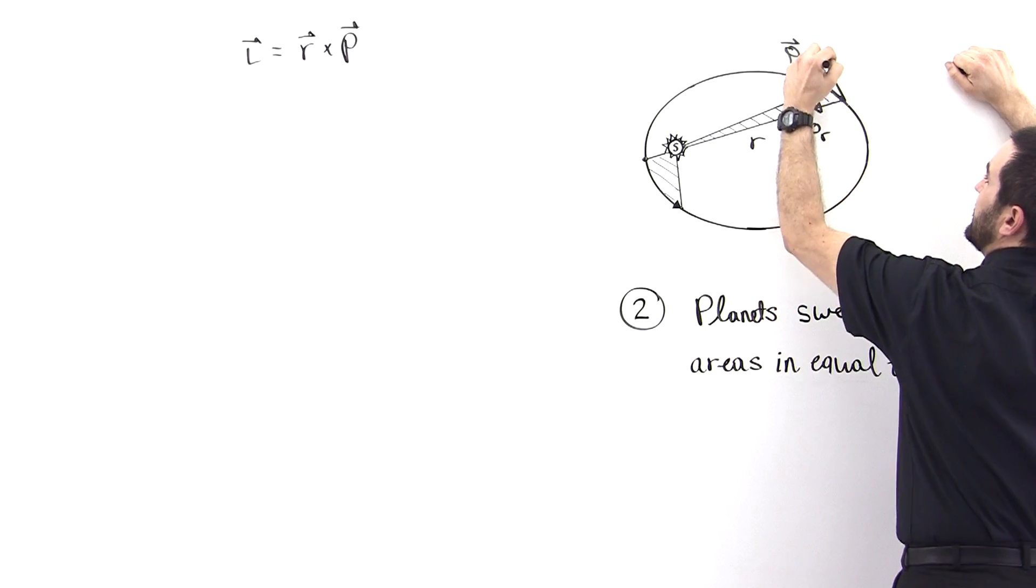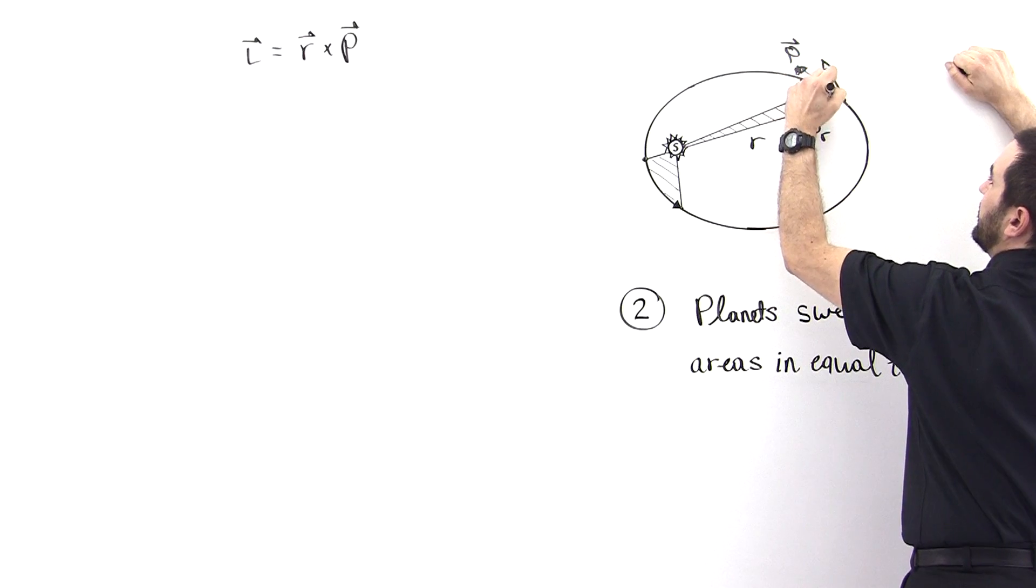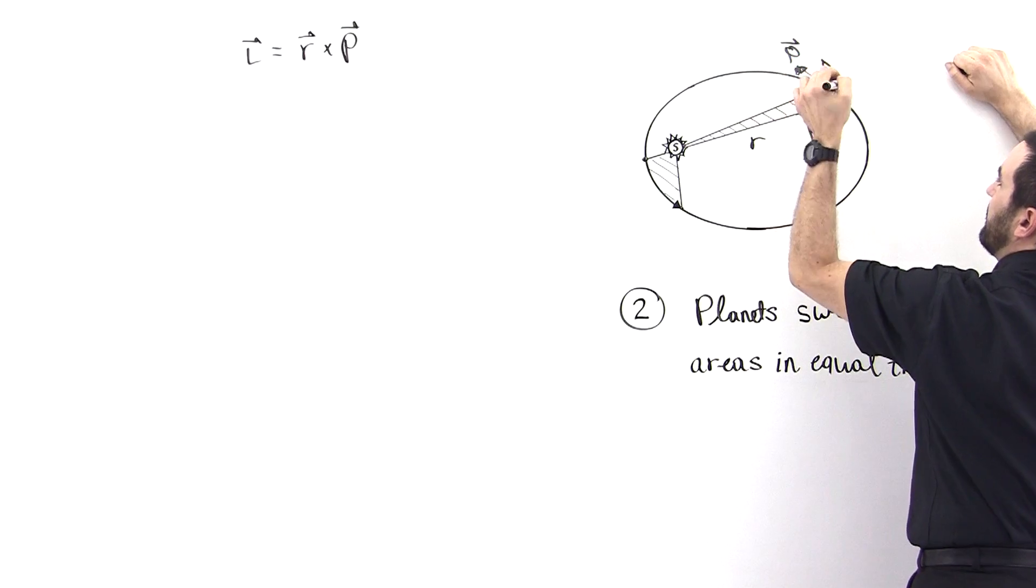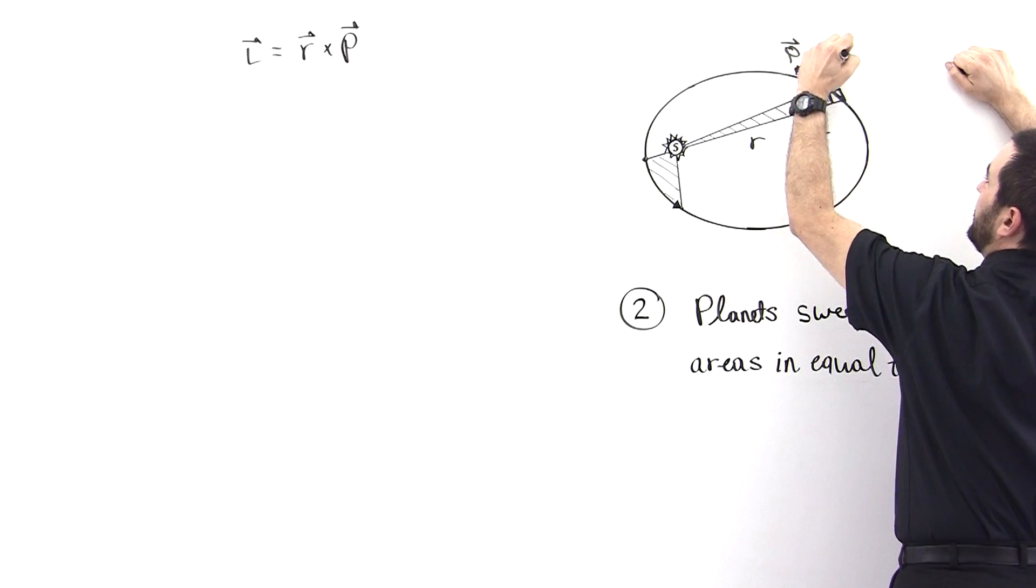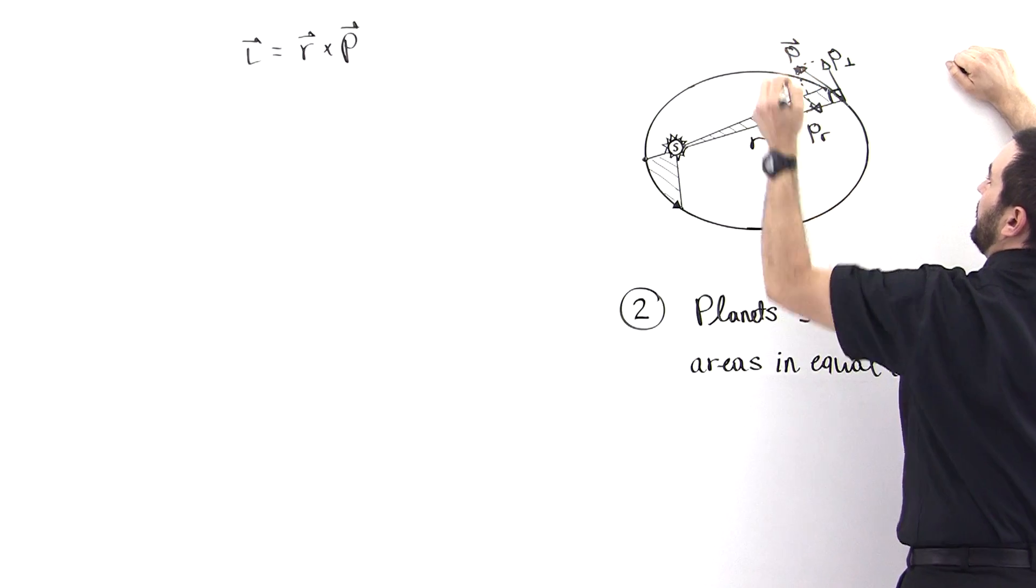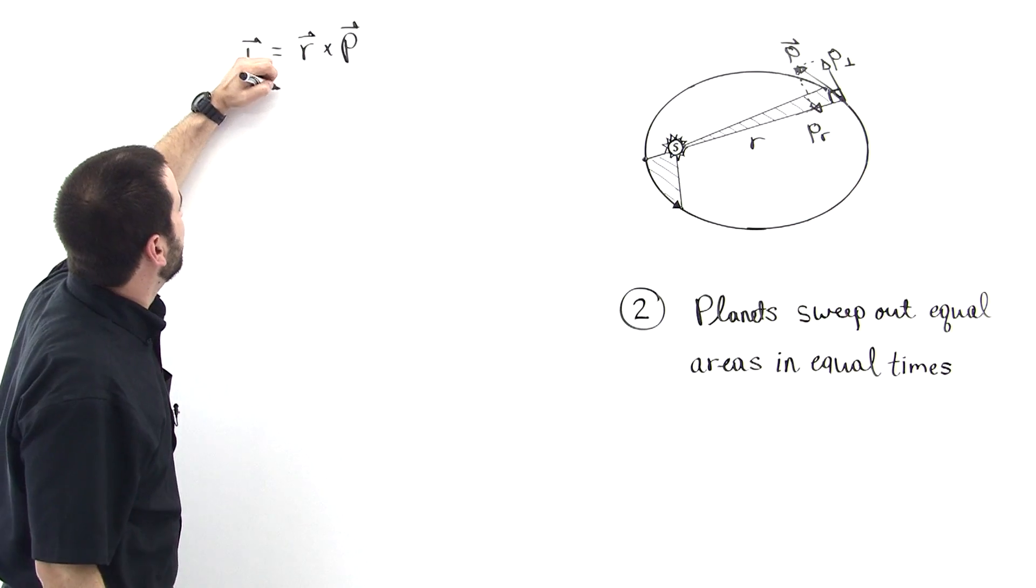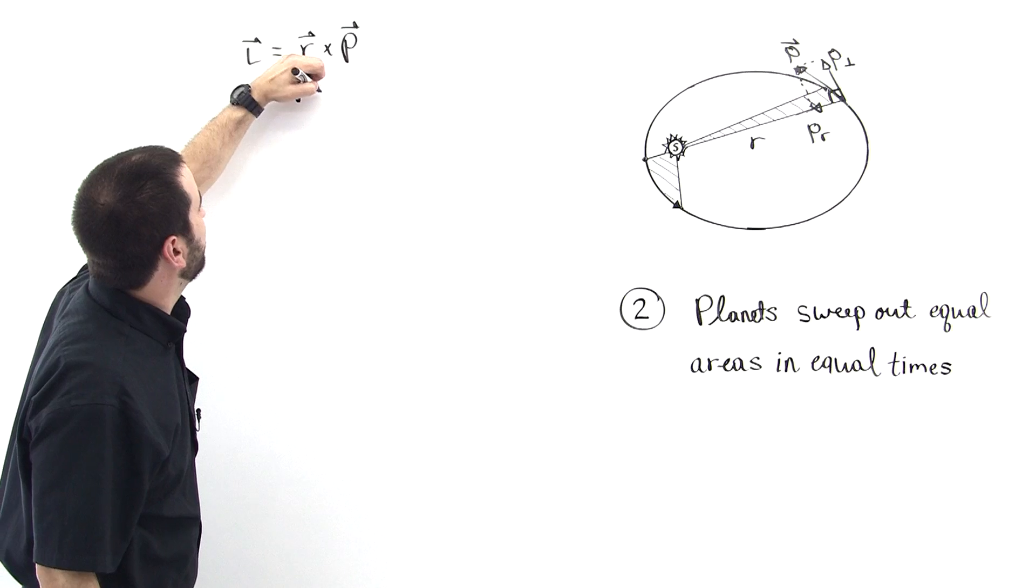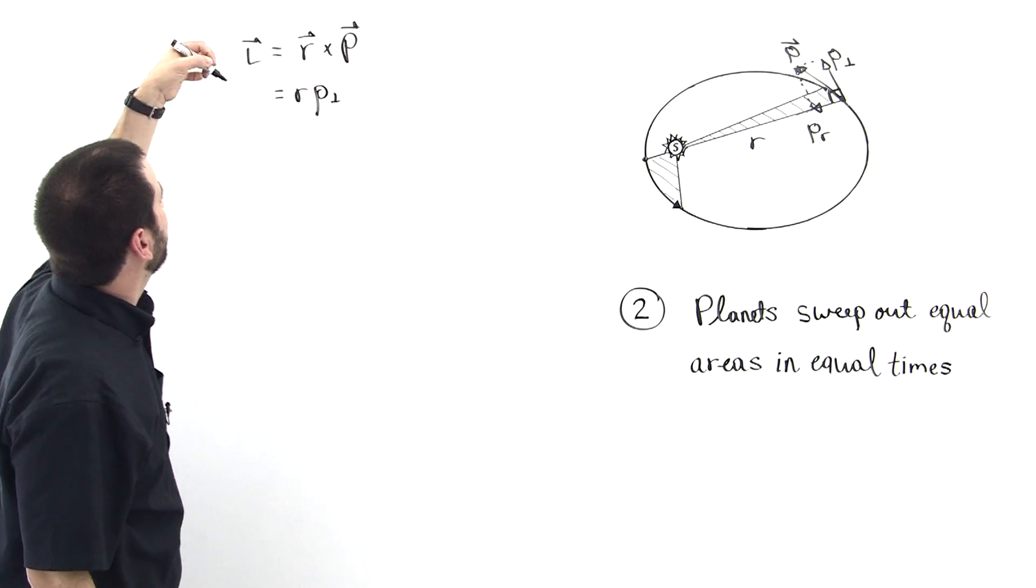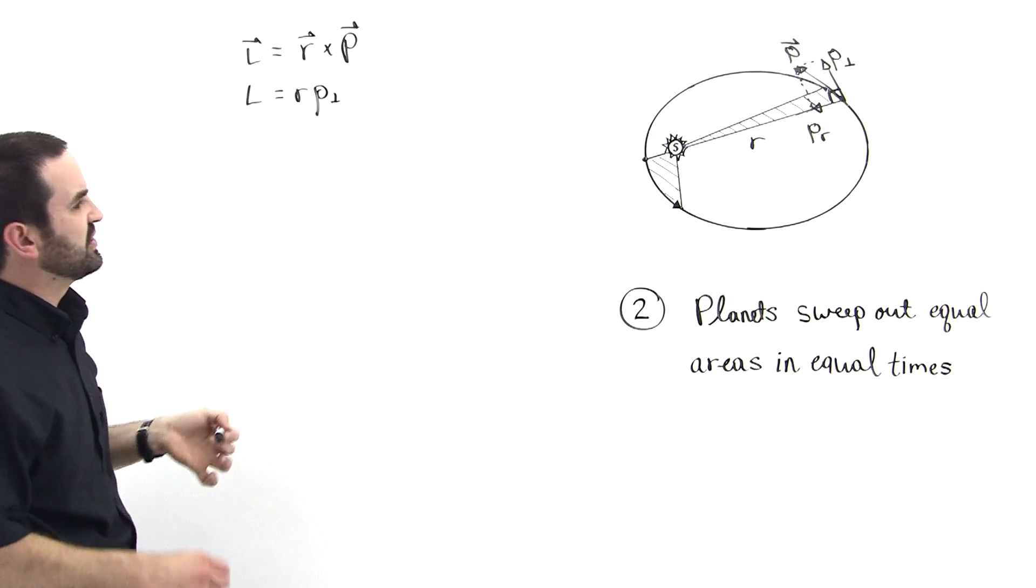we'll call it, and also it has a p perpendicular. And the perpendicular means that it's perpendicular to that moment arm. So this is p perpendicular, well it's only this perpendicular component of the momentum that contributes. So this is r times p perpendicular.